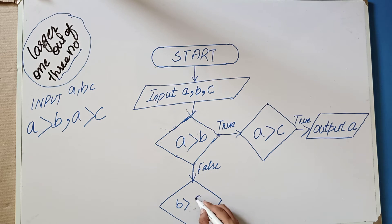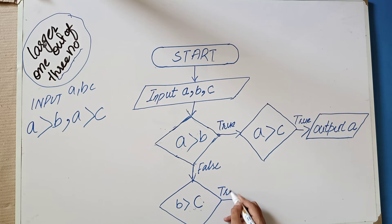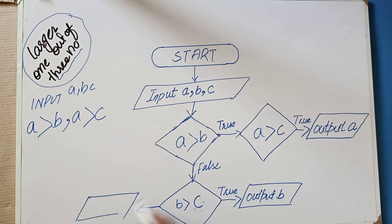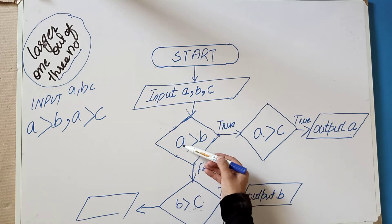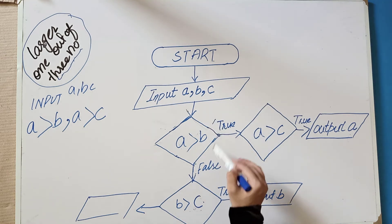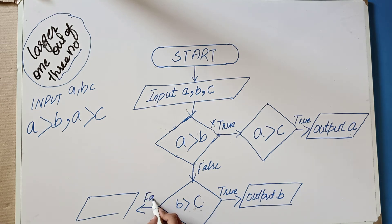If B > C is true, then our output is B — B is the largest. If A and B will not be greater, then which number will be greater? C. If B is not greater than C, then C will be the largest number.